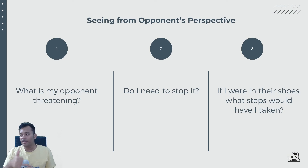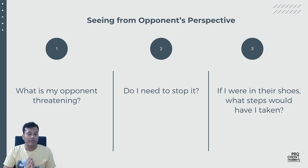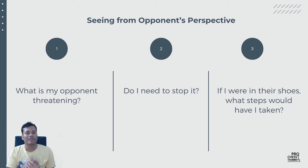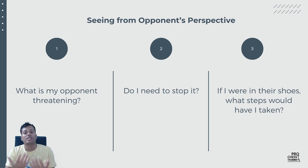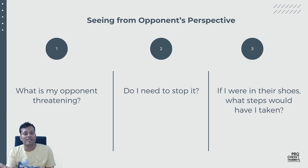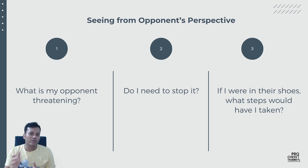The very first chapter, we start with seeing from opponent's perspective — basically asking, what is my opponent threatening? But it is immediately connected with the second question: do I need to stop it? Because if you just keep asking what your opponent is threatening, your game could be very defensive. Maybe the threat is really not a threat — continue with your own idea. And finally, if I were in their shoes, what steps would I have taken? Does he have any hidden idea? We will solve positions based on this.